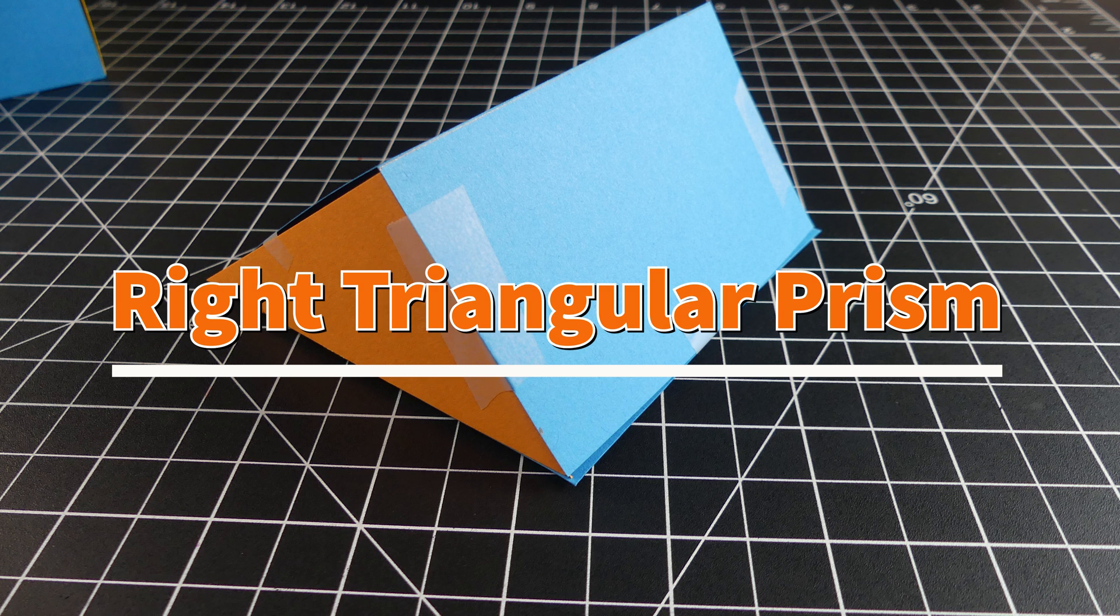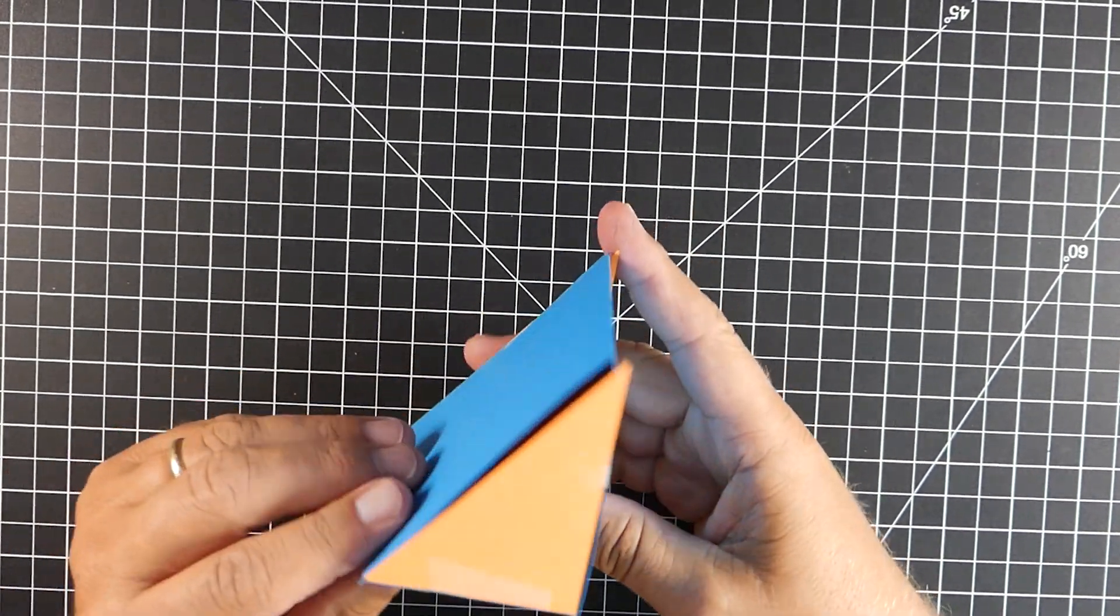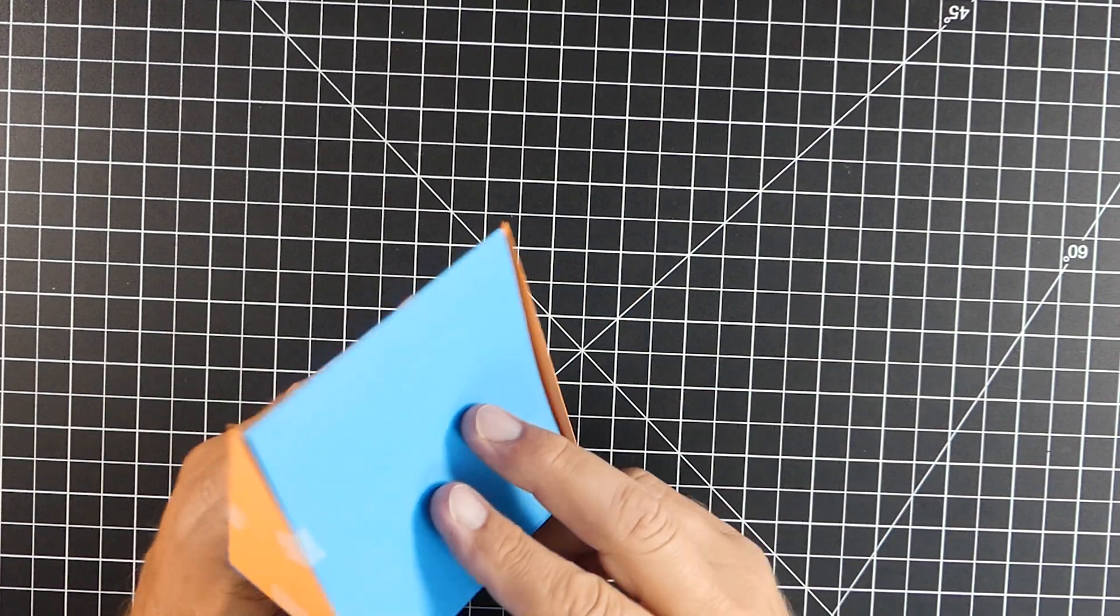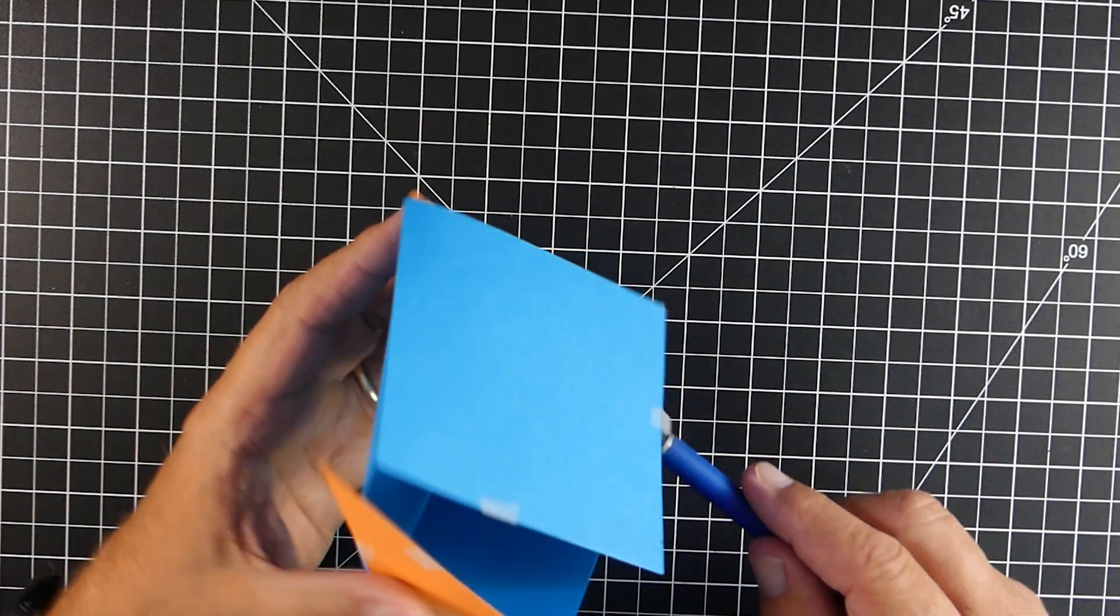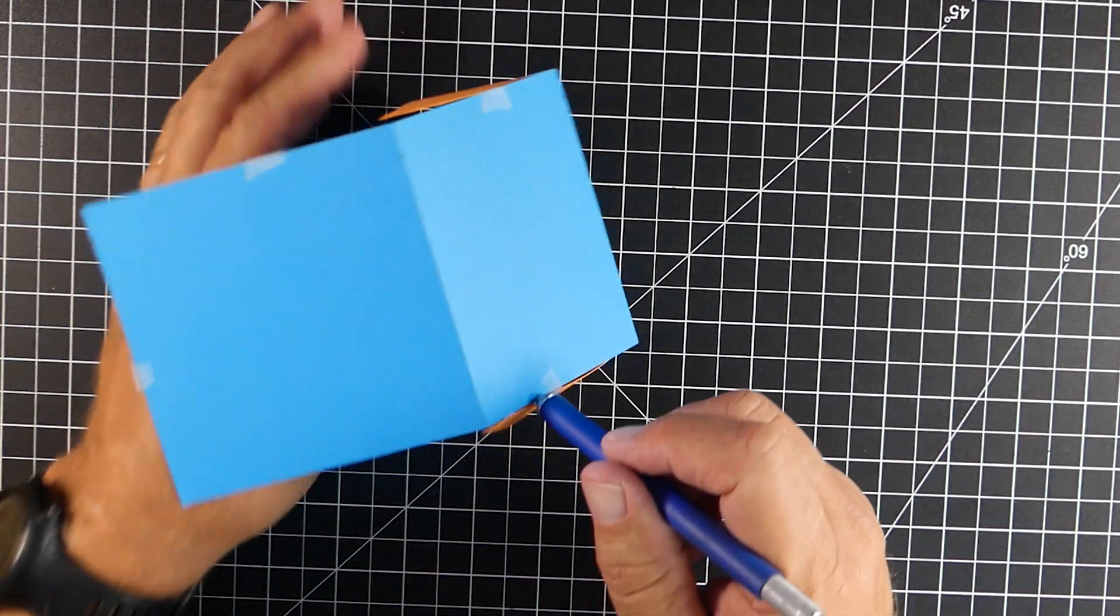So let's look at our next one, another prism, the right triangular prism. You can see the bases are both right triangles. They're the exact same dimensions and they're parallel. So just like before, we're going to cut right along the edges.